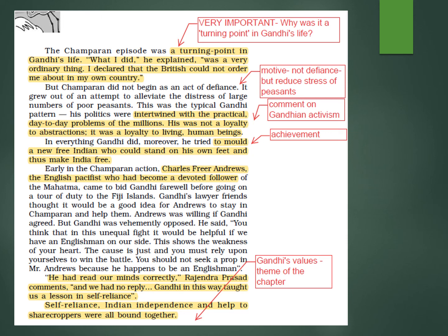But Champaran did not begin as an act of defiance. It grew out of an attempt to elevate — to decrease — the distress of large numbers of poor peasants. This was the typical Gandhi pattern: his politics were intertwined with the practical day-to-day problems of millions. His was not a loyalty to abstractions — it was a loyalty to living human beings. That was the beauty of Gandhi's activism.